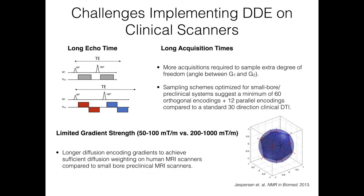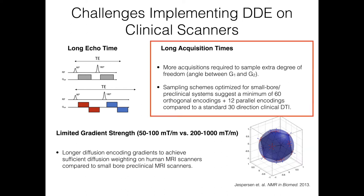There are clear challenges in implementing multiple diffusion encodings on clinical scanners. Diffusion imaging is already SNR-starved, since contrast is based on signal attenuation and gradient play-out takes significant time. Adding two pairs of gradients can really push the echo time out. The initial sampling schemes required quite a few acquisitions, and clinical scanners have much more limited gradient strength compared to preclinical scanners.